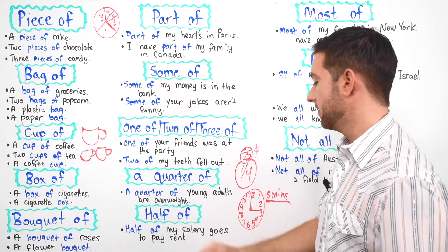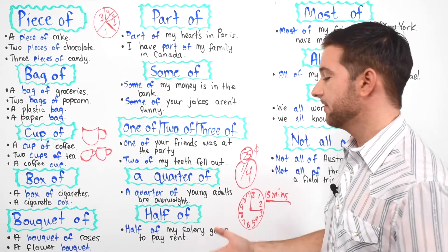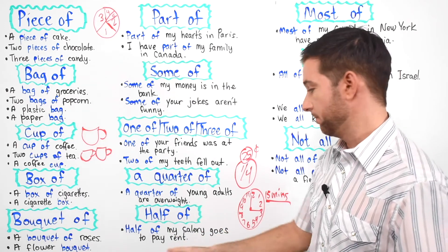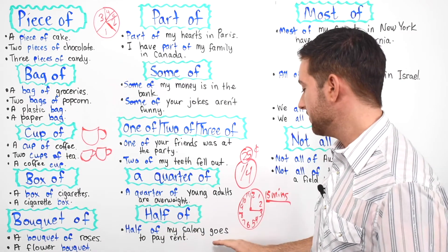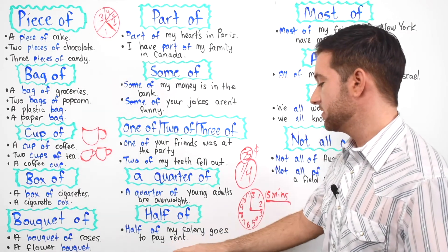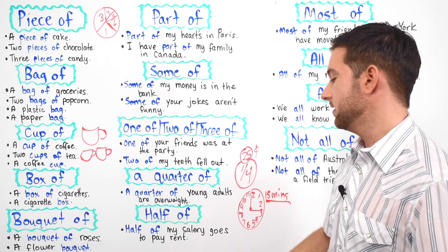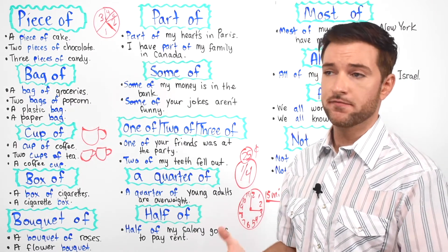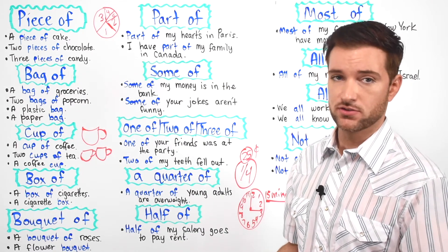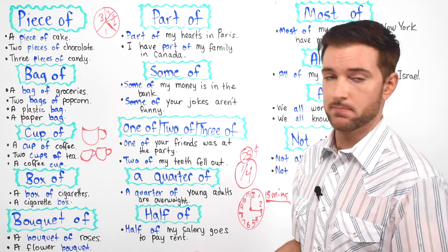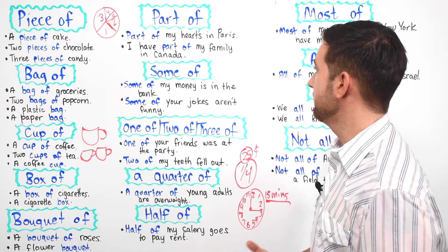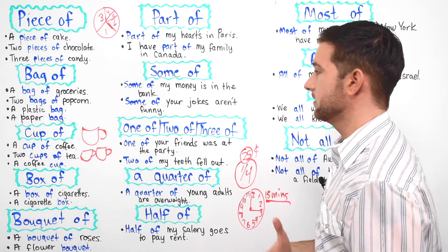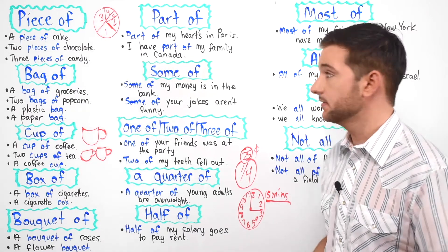"Half of" — meaning 50%. Half of my salary goes to pay rent, meaning you earn $1,000 per month and $500 goes to pay for the apartment.